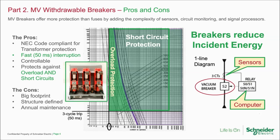The cons here are that the consequence of metal clad switchgear using withdrawal breakers is that they're fairly large, and the structure is very well defined in the standards — meaning all manufacturers have fairly similar solutions with only a few differentiators. We still have the issue of annual maintenance. Because of the shape and size of the interrupter connections — finger clusters — we have to watch out for issues in that region.